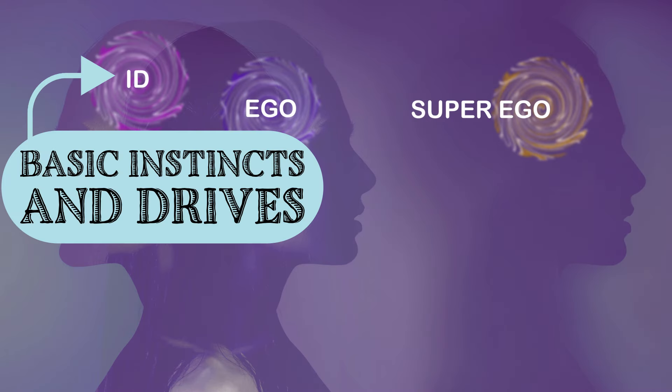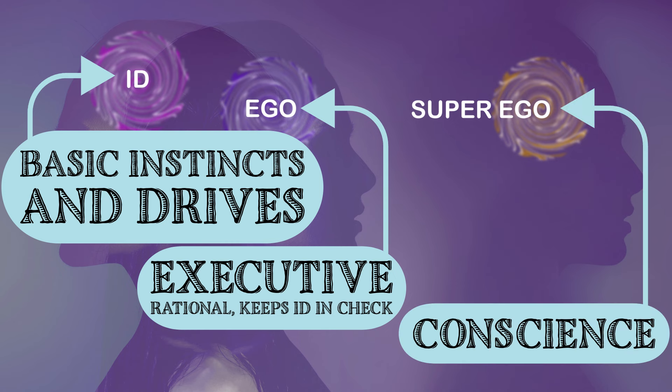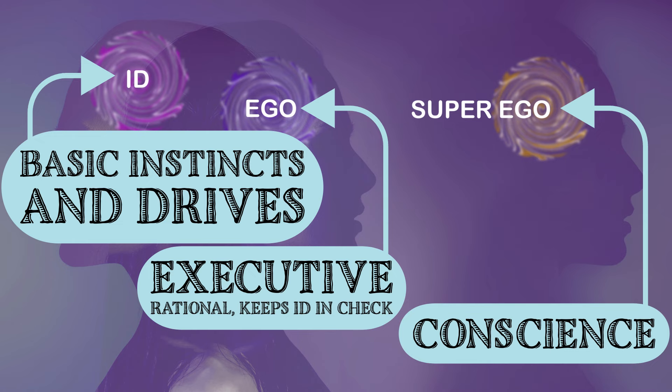The id contains basic instincts and drives such as the need for food, water, sex, and pleasure. The ego, considered the executive or rational part of the personality, acts to keep the id in check. The superego, on the other hand, embodies the conscience of the individual. According to Freudian theory, an improper fixation during an emotional developmental stage can result in criminal activity.